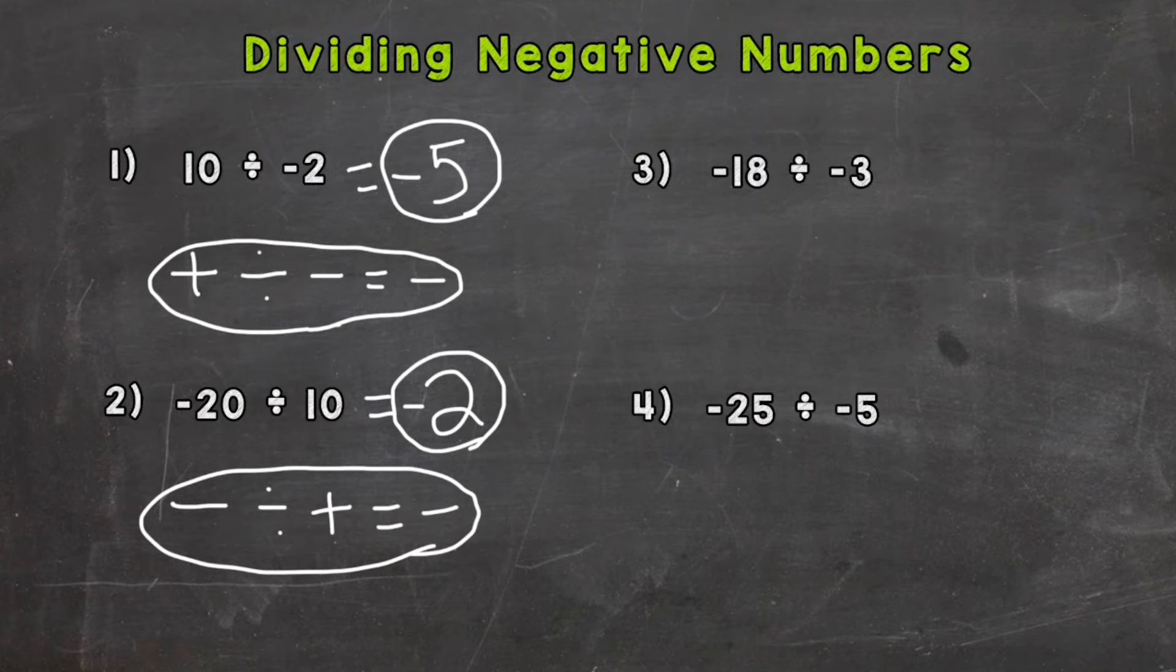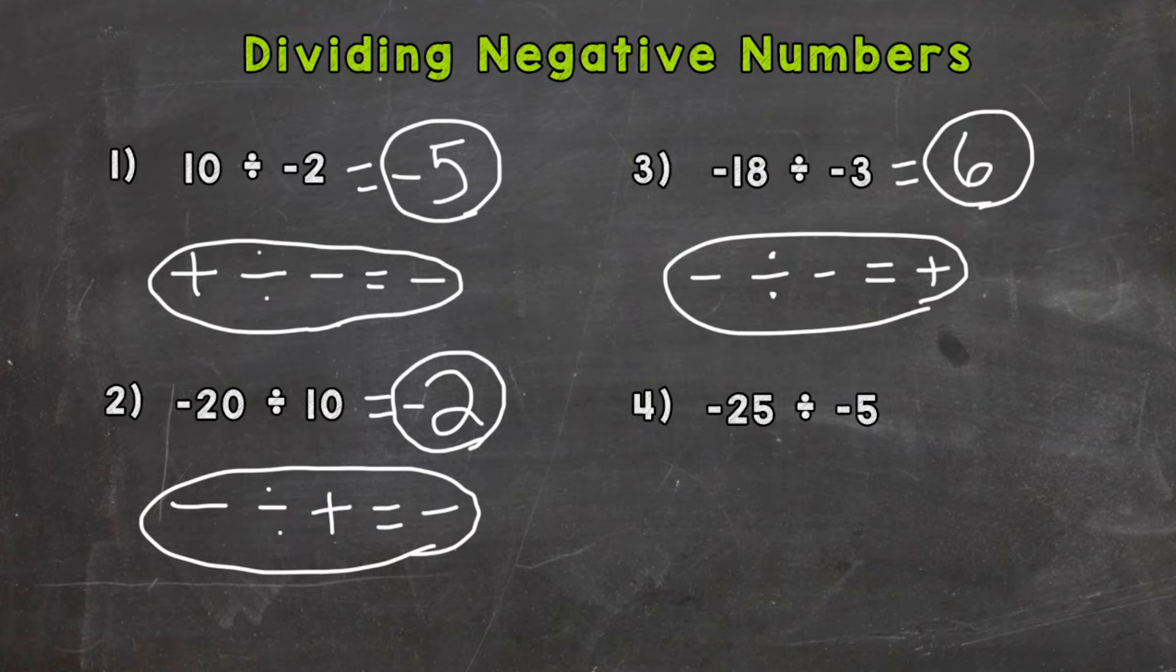For number 3 we have a negative divided by a negative and that's going to give us a positive answer. A negative divided by a negative gives us a positive answer. So 18 divided by 3 is 6.